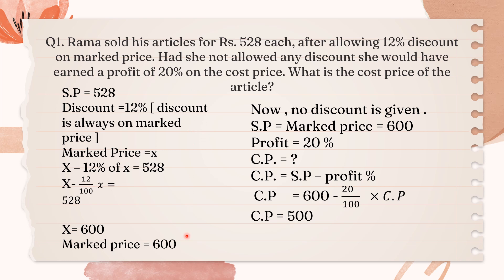In the first part we calculated the marked price. The second part of the question is: if there is no discount given, the profit would have been 20% on the cost price. No discount is given, therefore selling price equals the marked price, which is 600. So the profit is 20% and we have to calculate the cost price. Cost price equals selling price minus 20% of cost price. So the cost price comes out to be 500. 500 is the answer.